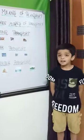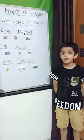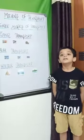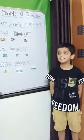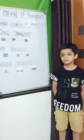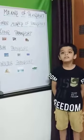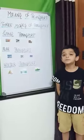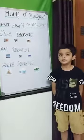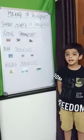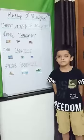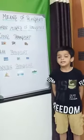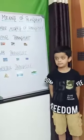Car and tonga are examples of animal driven. Rickshaw and cycle are examples of human driven. Car and truck are examples of petrol and diesel driven.